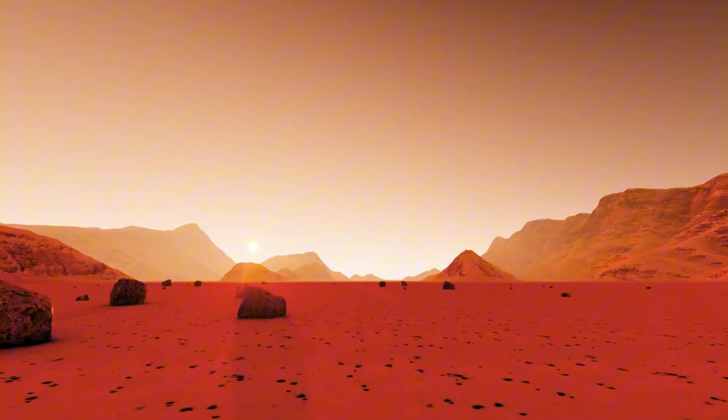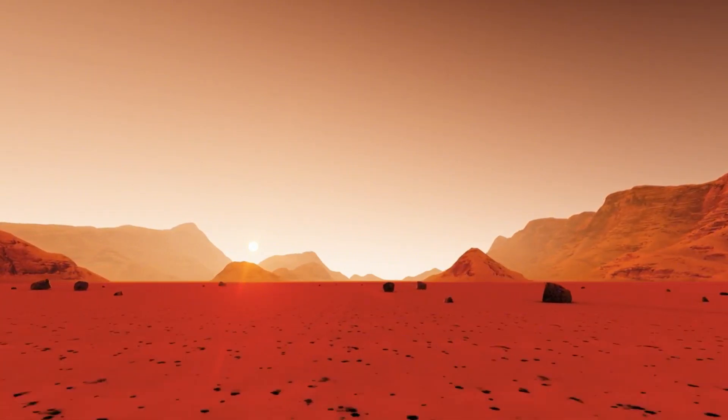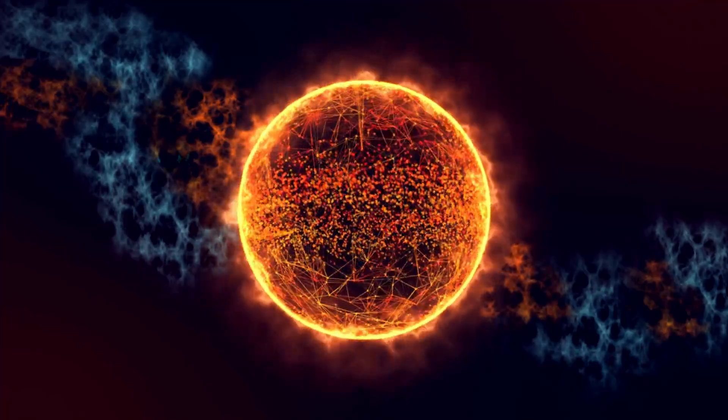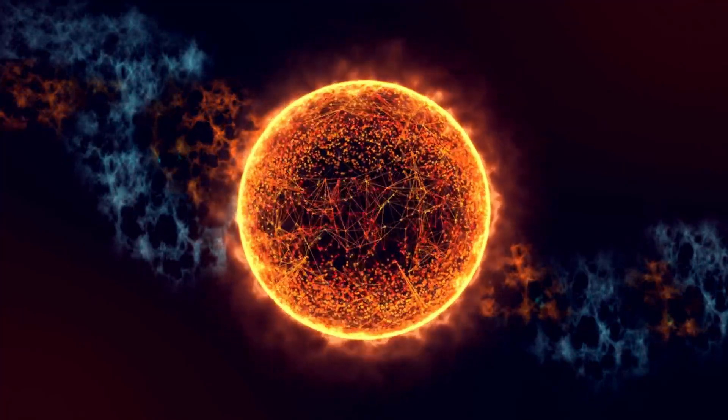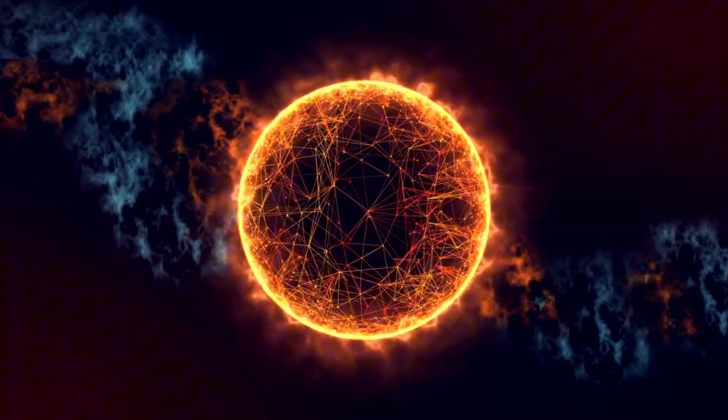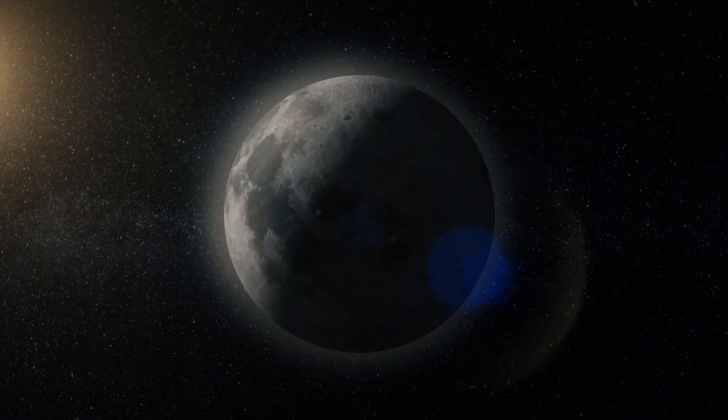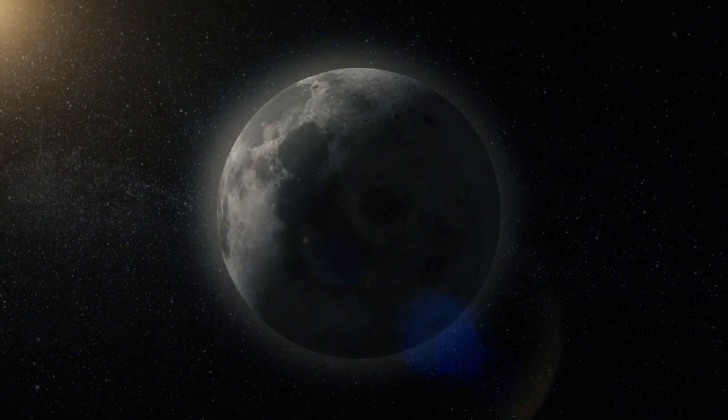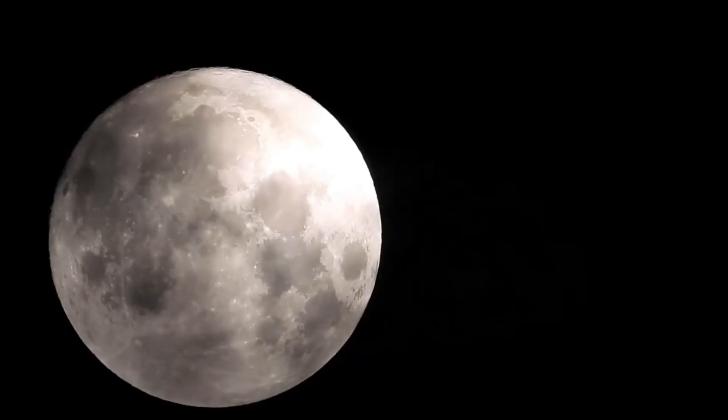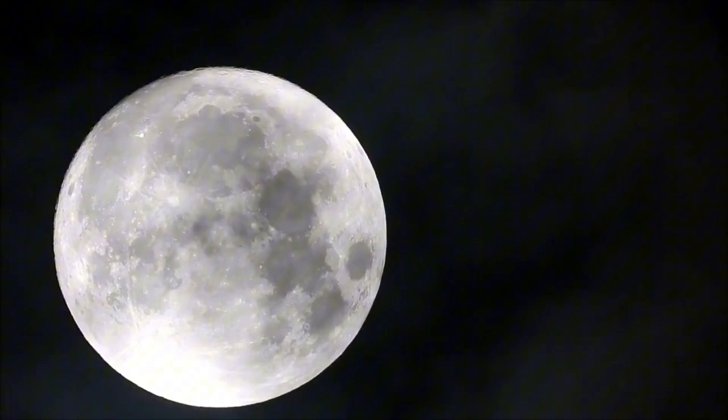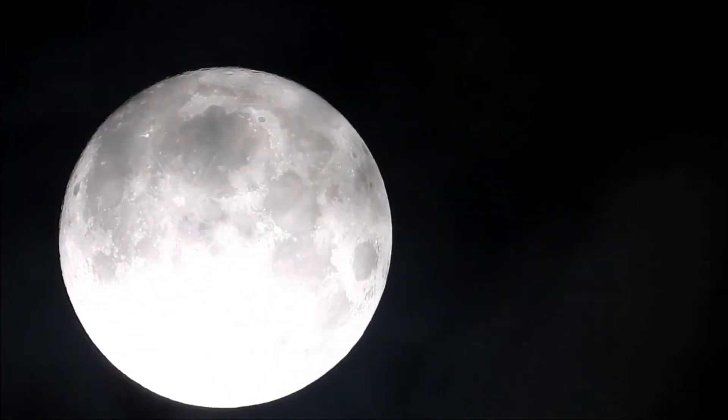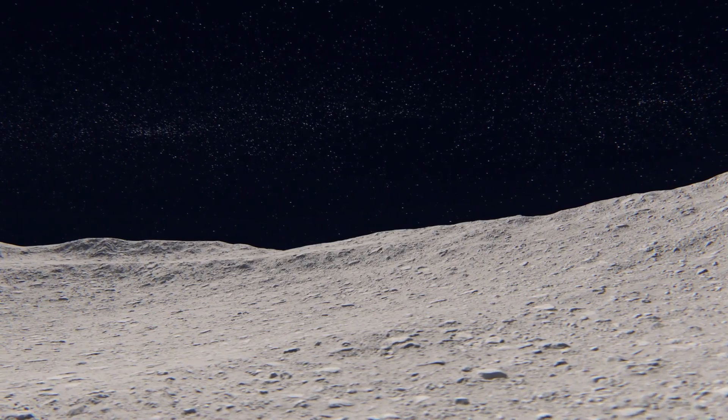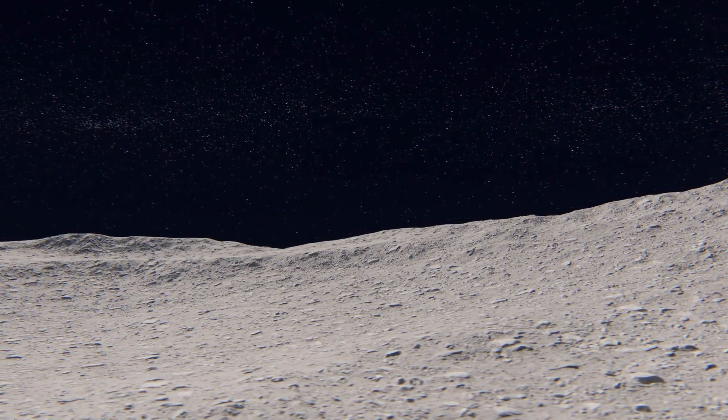As the merger of Andromeda and the Milky Way draws near, questions about the fate of our solar system arise. While the exact effects on our solar system remain uncertain, the potential for significant changes in our position within the galaxy is undeniable. These changes could disrupt the orbits of stars and planets, including our own sun. Such an event could have dramatic consequences for life on Earth, potentially altering the climate and causing shifts in the conditions necessary for life to thrive.